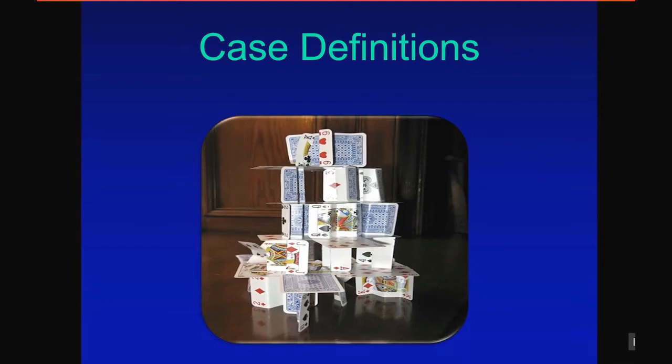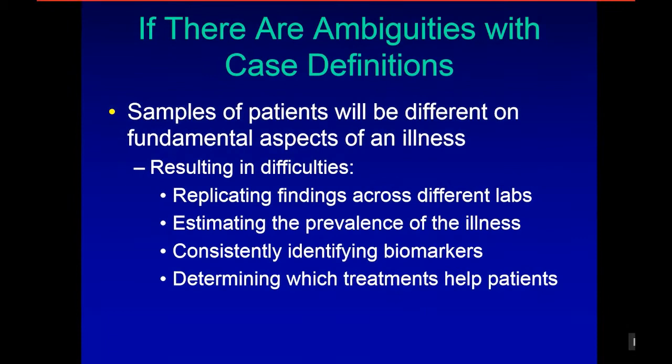If there are ambiguities with case definitions, samples of patients will be different on fundamental aspects of an illness, resulting in difficulties replicating findings across different labs, estimating the prevalence of the illness, consistently identifying biomarkers, and determining which treatments help patients.